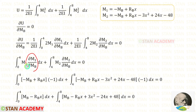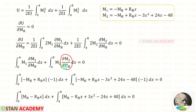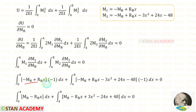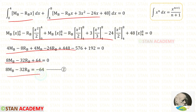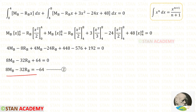Partially differentiating M1 with respect to Mb: for the Rb·x term it is 0; for minus Mb it is minus 1. Partially differentiating M2 with respect to Mb: for the first four terms it is 0; for minus Mb it is minus 1. Multiplying and integrating both expressions, after integrating and simplifying we get equation number 2.